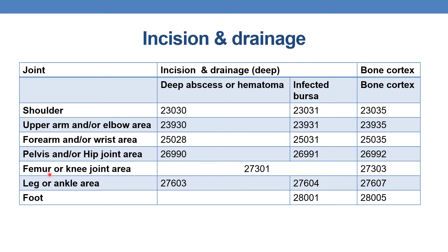For the femur or knee joint area: for deep abscess, hematoma, or bursa, there is only one CPT — 27301. For incision into bone cortex of the knee and femur, report 27303.